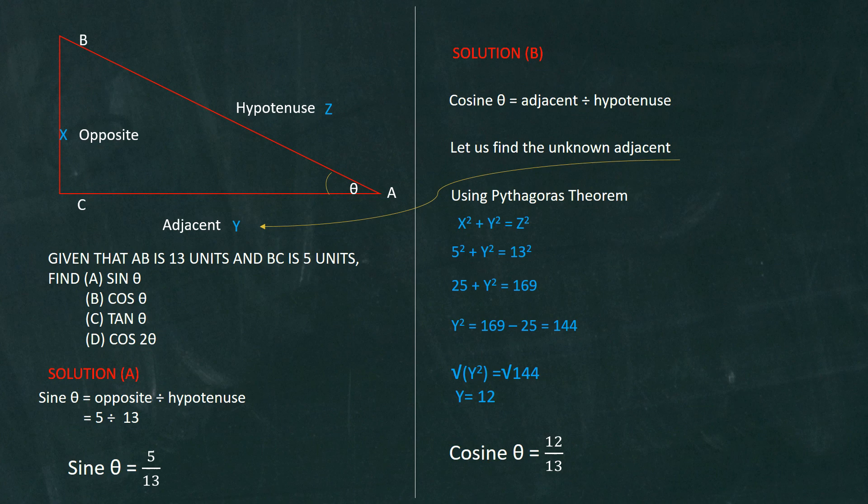Now the next thing is we need to find the tangent of theta. The tangent of theta is quite easy because we already have all three sides. So the tangent of theta is going to be the opposite divided by the adjacent. The opposite we already know is 5, the adjacent we already know is 12, and so we have 5 divided by 12. Easy peasy once you find the third side.